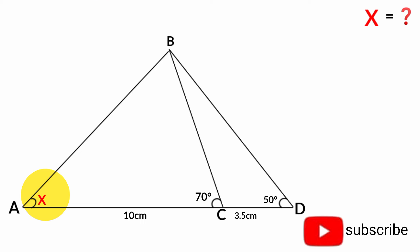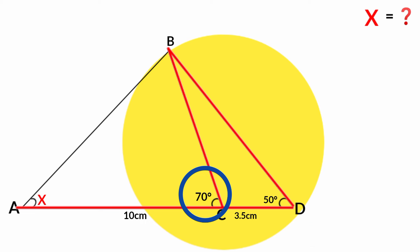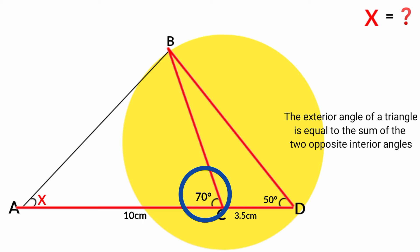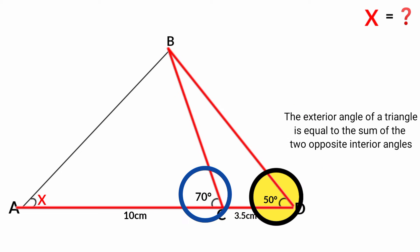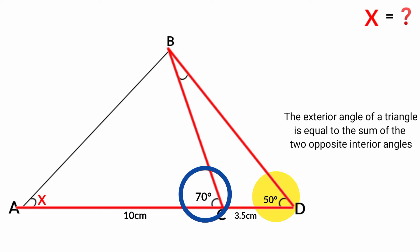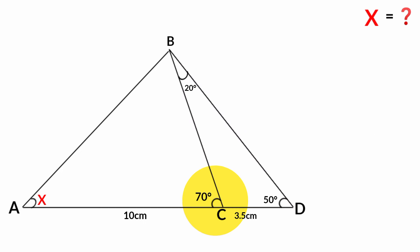The method we are going to use: if you look, this angle is an exterior angle of this triangle. In geometry, we know the exterior angle of a triangle is equal to the sum of the two opposite interior angles — that is this and this. Since this is 50 degrees, this must be 70 degrees minus 50 degrees, which is 20 degrees.